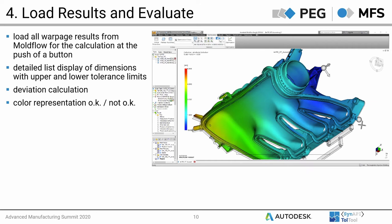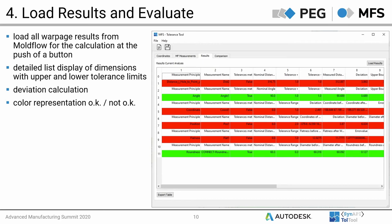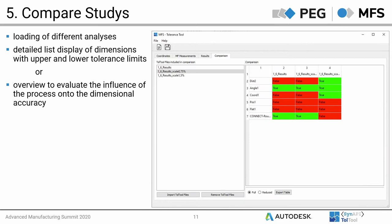If shrinkage and warpage results are available in Moldflow Synergy after a successful simulation, the results can be accessed by simply clicking the 'Load Results' button. A table shows the names of individual measurements, the nominal dimensions, the tolerance field, the results calculated from the Moldflow simulation, and the deviation from the tolerance field. Through colored representation of the individual lines, it can be recognized immediately whether a measurement is within or outside the given tolerance field. It is also possible to view variant calculations and quickly evaluate whether changing process parameters has led to an improvement.